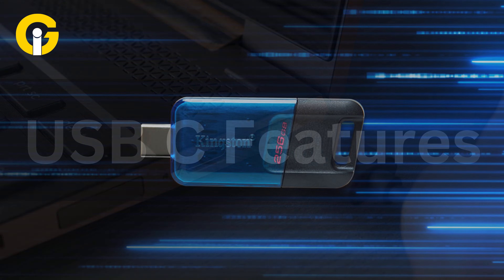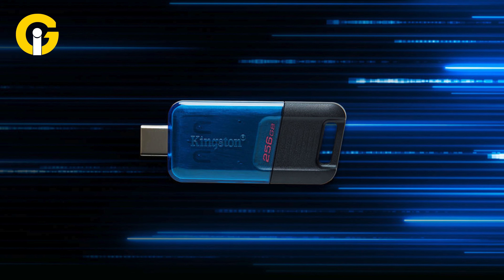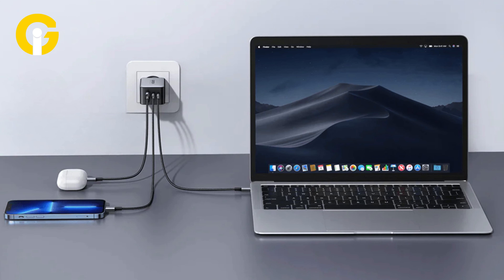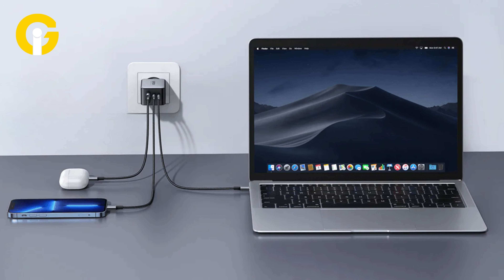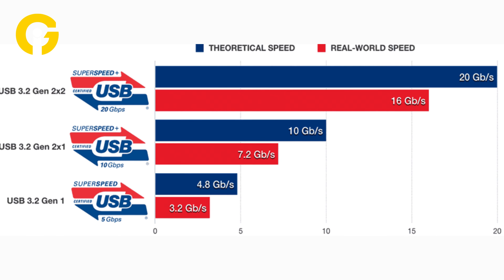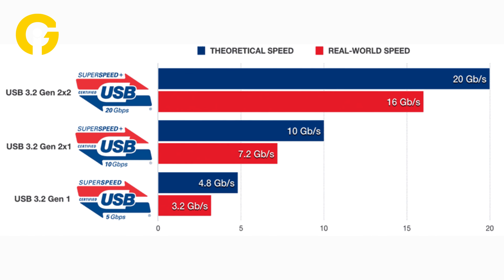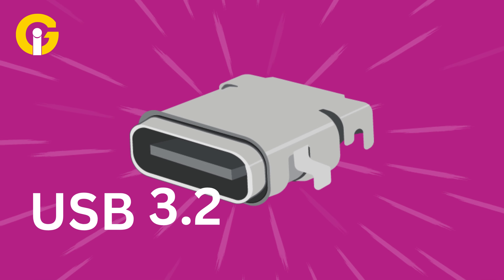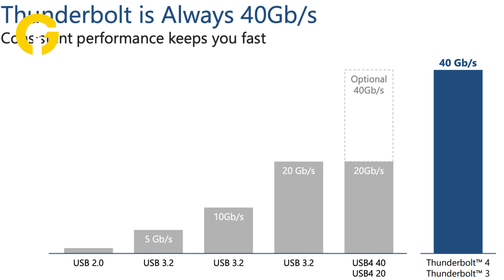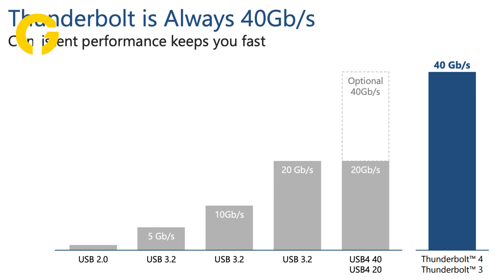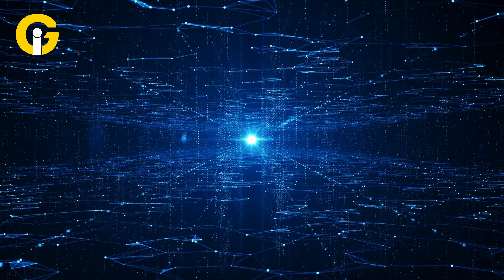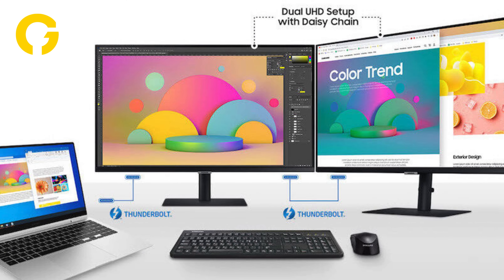For example, USB-C can support USB Power Delivery, which allows for charging devices up to 100 watts, such as laptops, tablets, and phones. It also supports USB 3.0 and higher, which enable data transfer speeds up to 20 Gbps with USB 3.2 Gen 2x2. Thunderbolt 3 and 4 are high-speed protocols that can deliver up to 40 Gbps of data transfer and support multiple displays and peripherals.